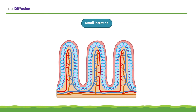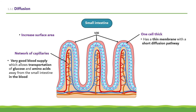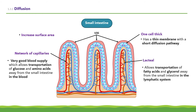In humans, the small intestine is developed for efficient absorption of digested food. It is covered in millions of finger-like projections called villi, which increase the surface area. Each villus is just one cell thick, meaning it has a thin membrane with a short diffusion pathway. A network of capillaries provides a very good blood supply, allowing transportation of glucose and amino acids away in the blood. An internal structure called a lacteal allows transportation of fatty acids and glycerol away in the lymphatic system.